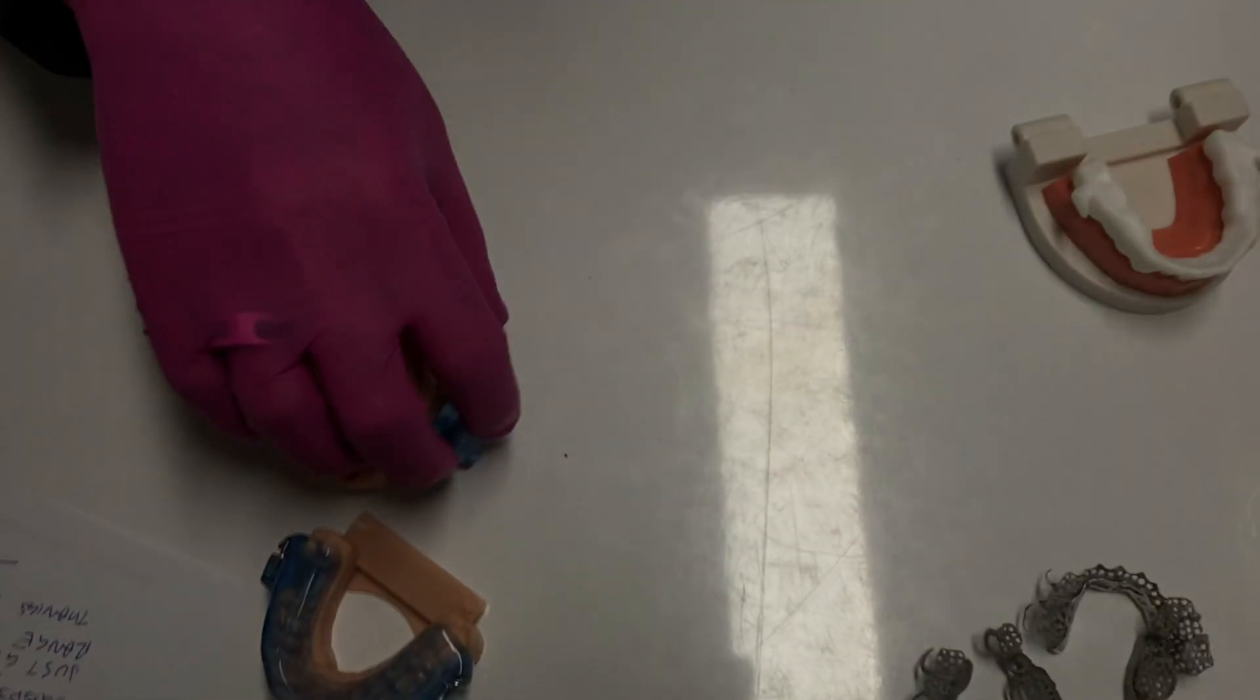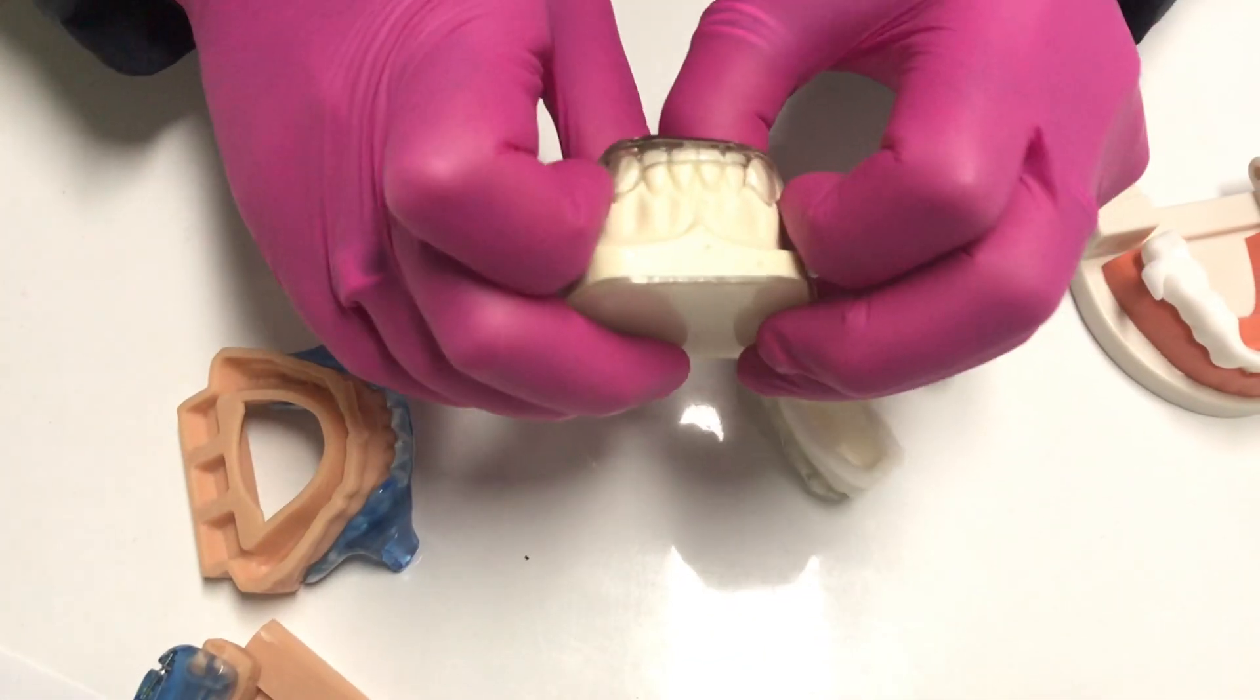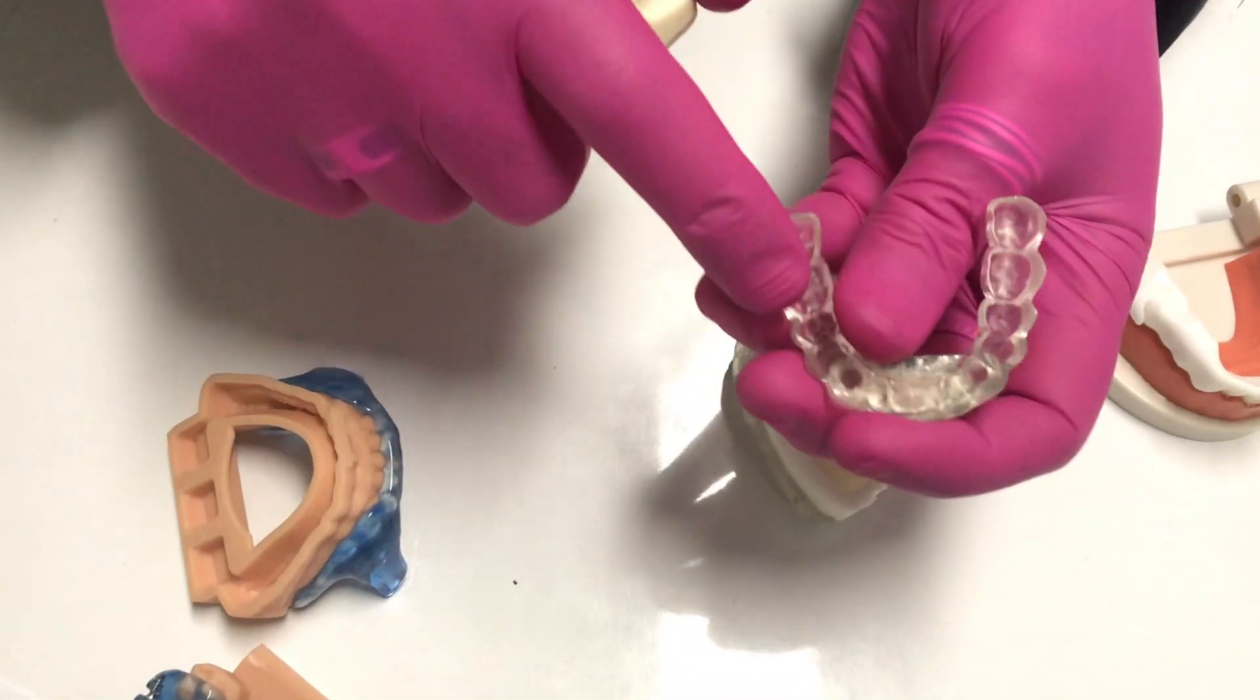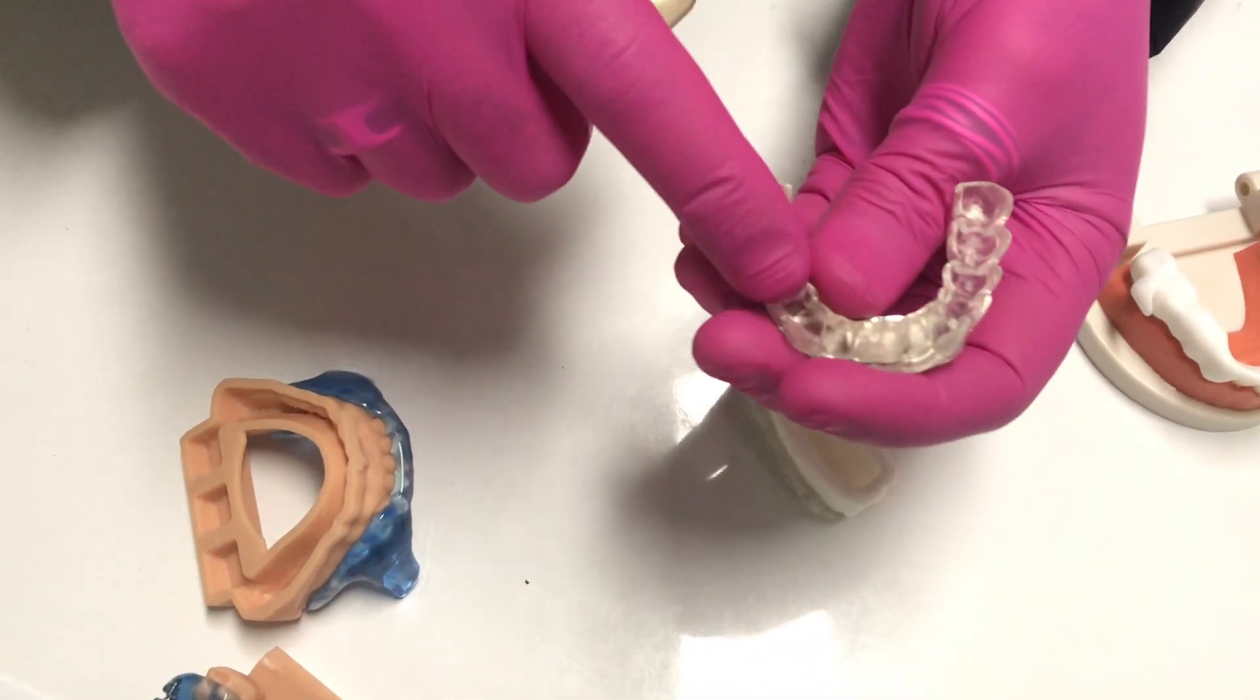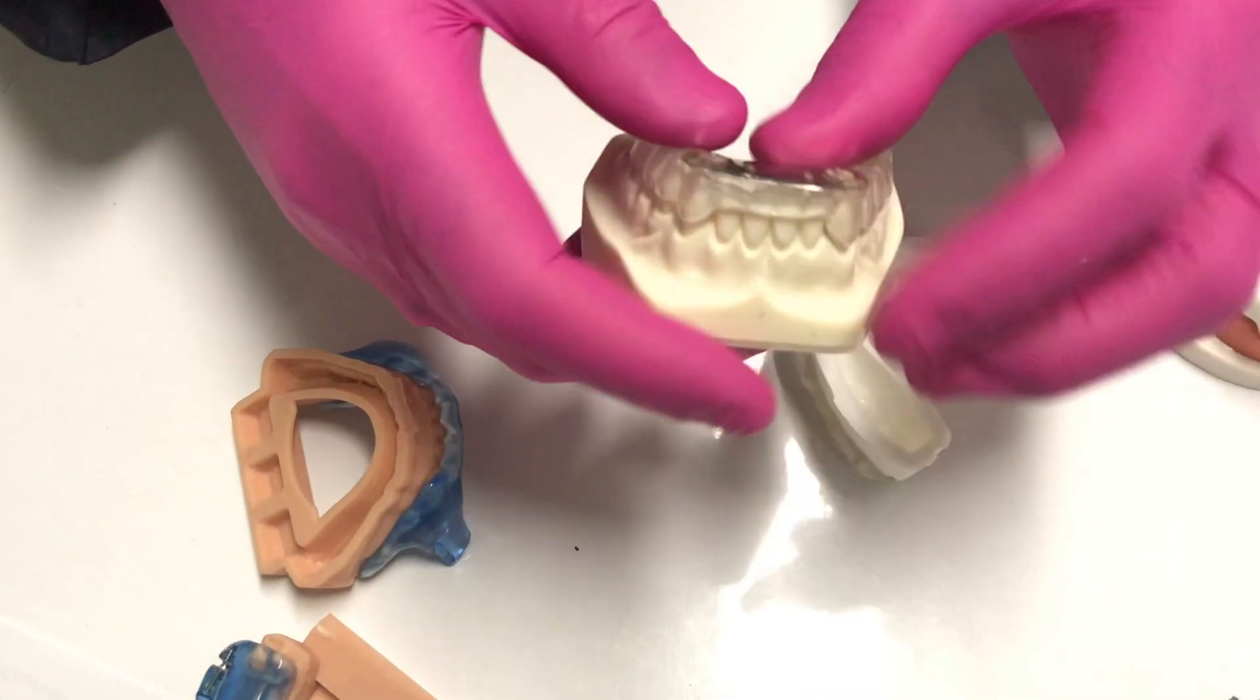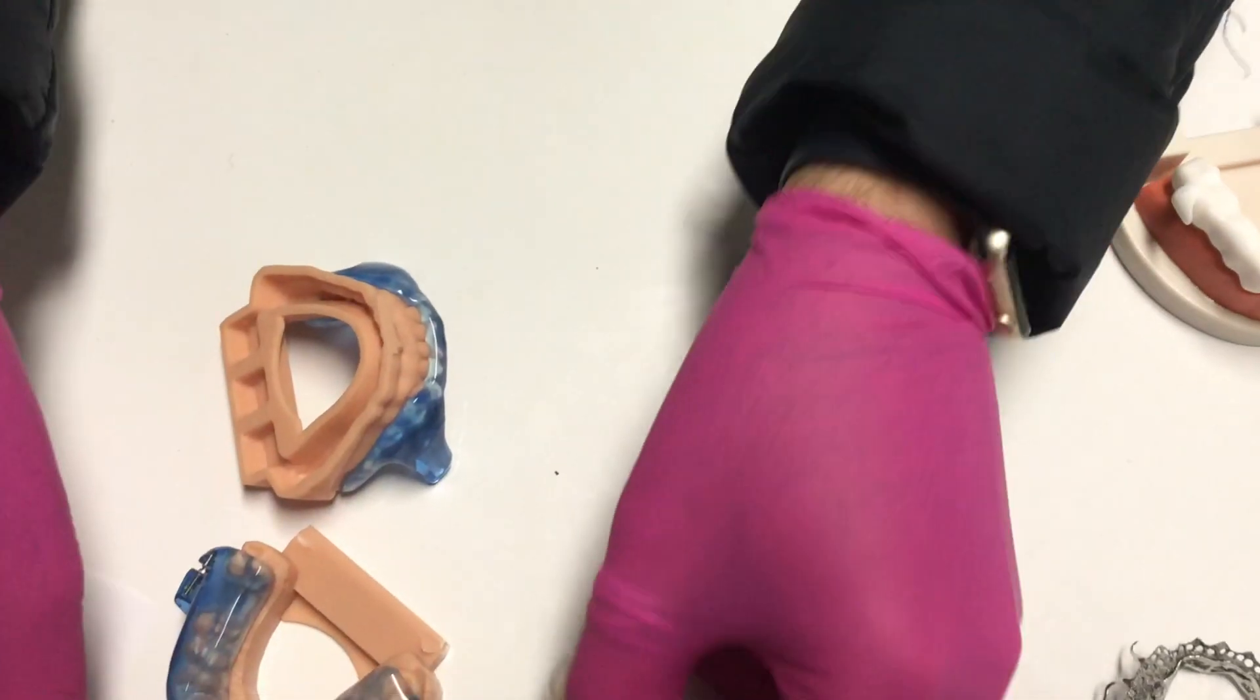The standard MDSAs, obviously also 3D printed or milled, even thickness, probably about a 0.7, 0.8 sidewall here. Again, a great appliance. The upper there with the anterior adjustment for titration.